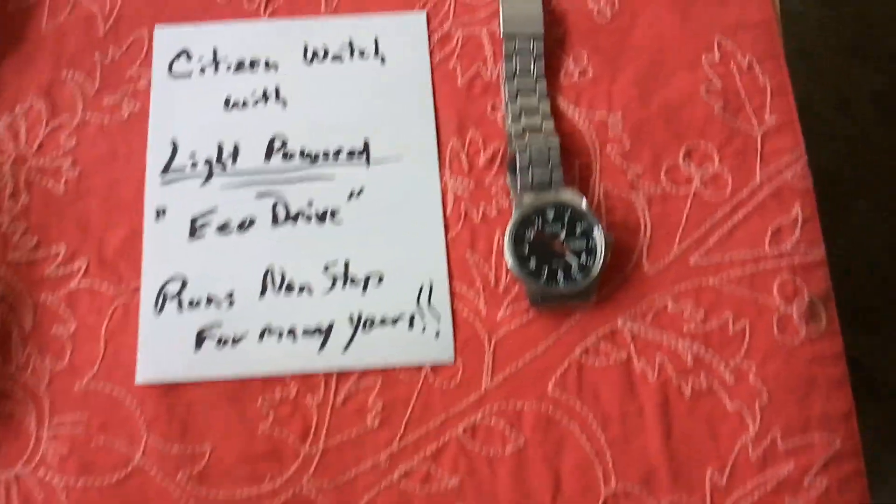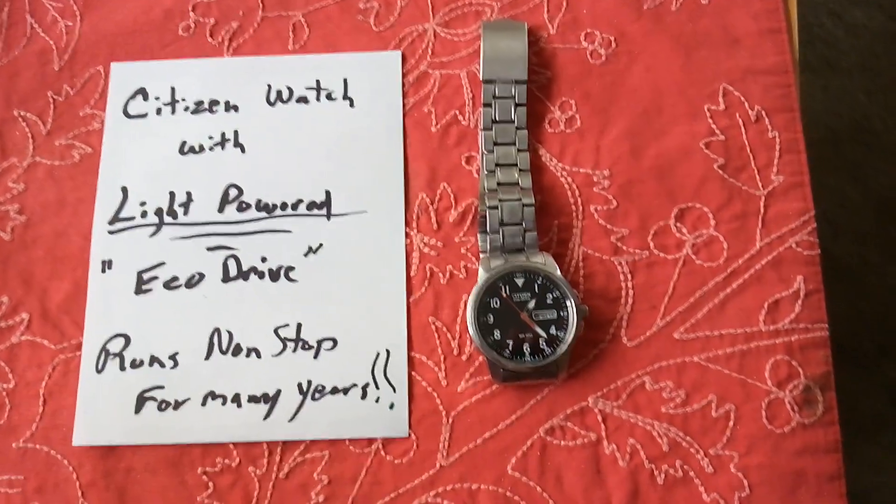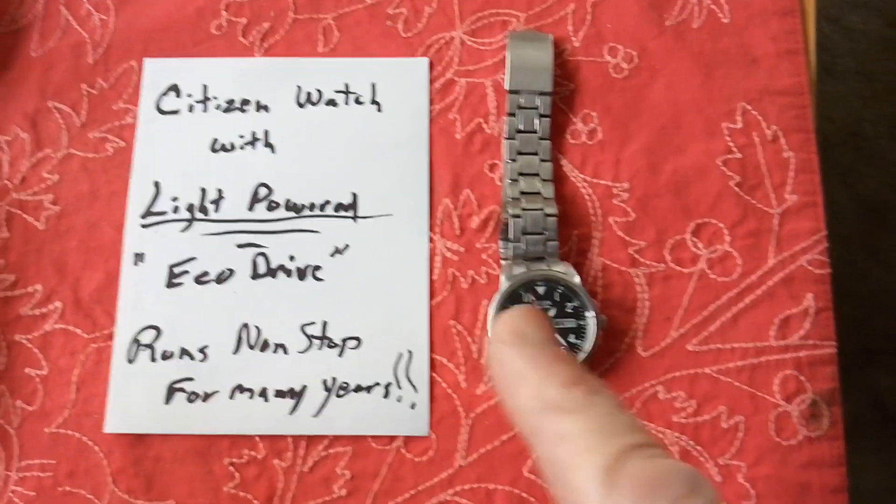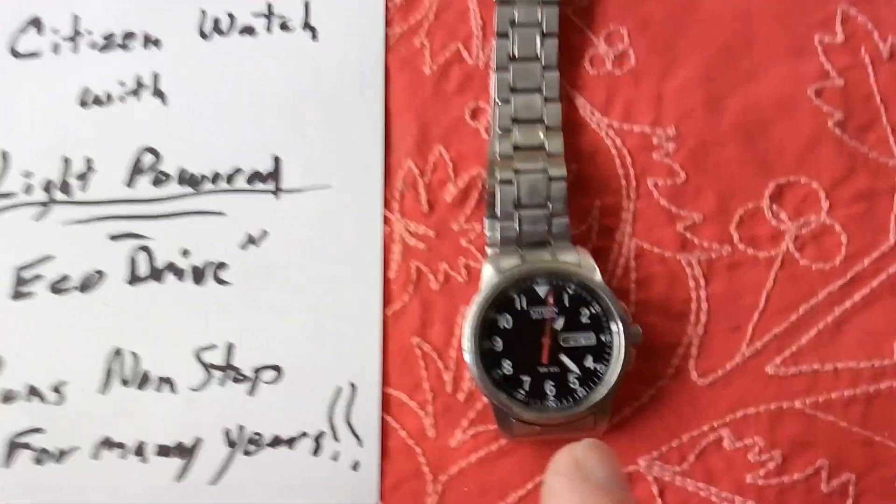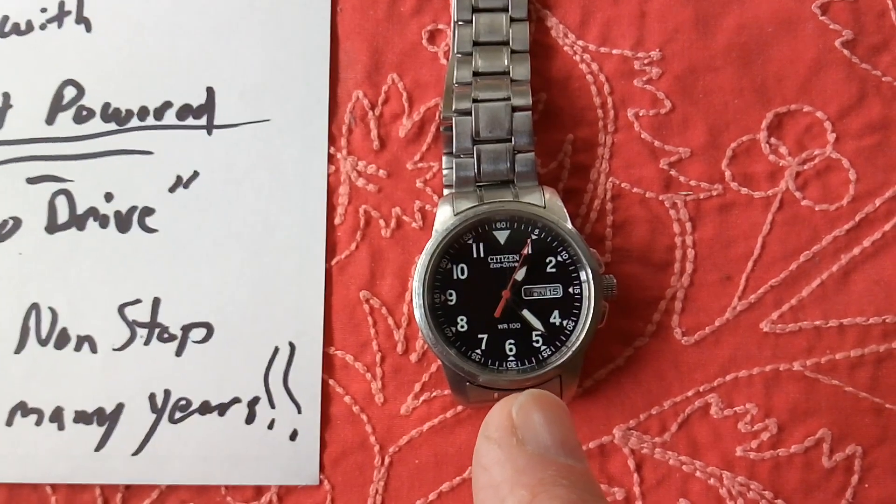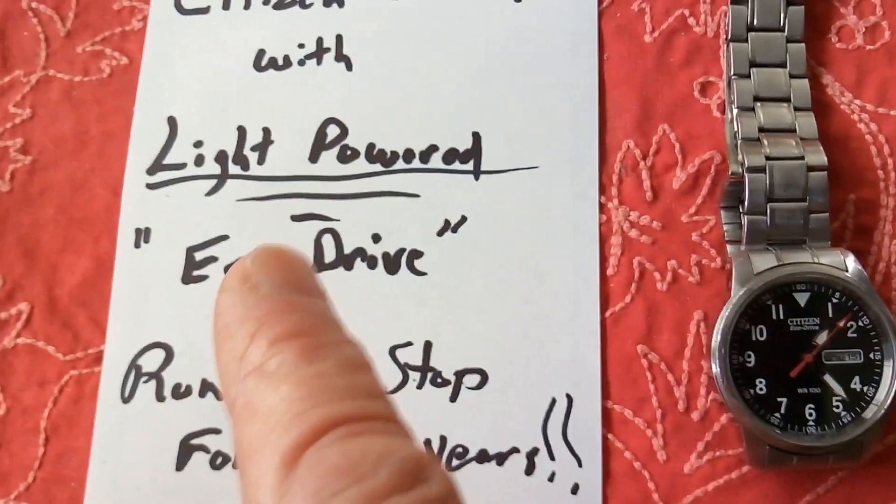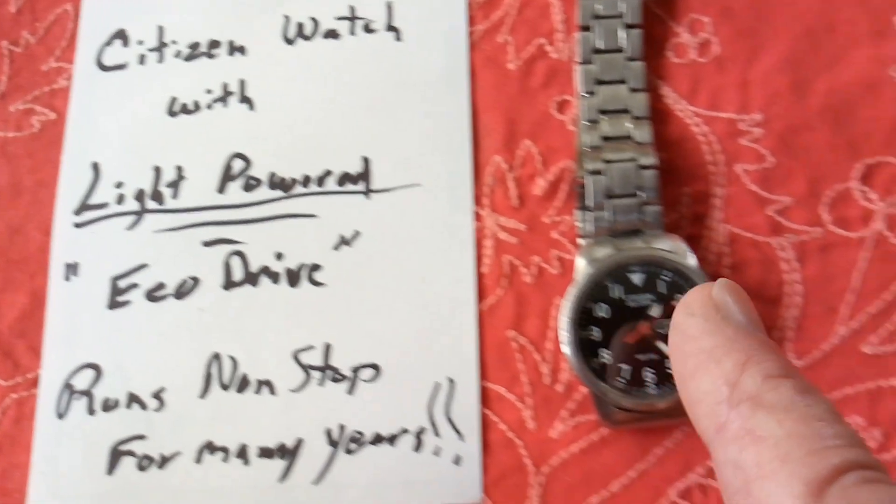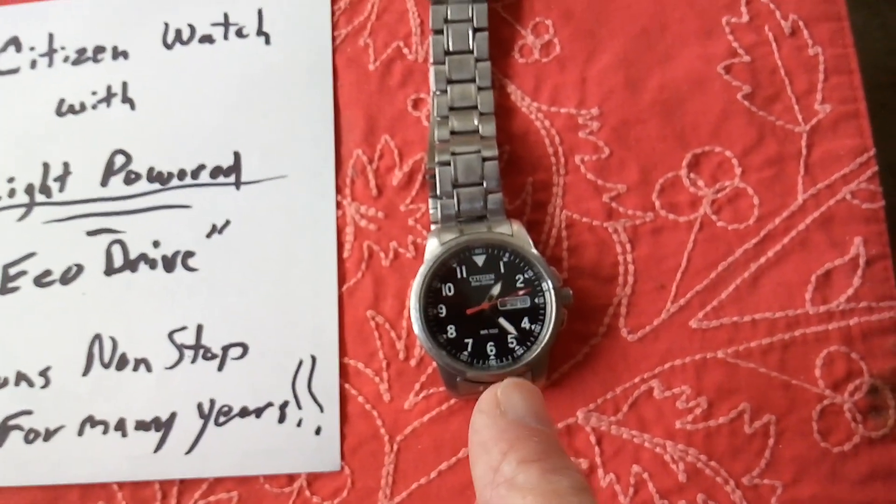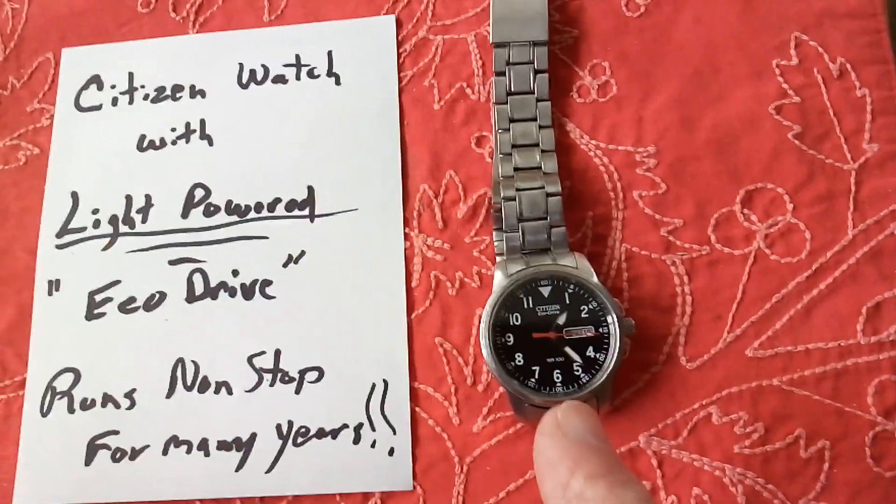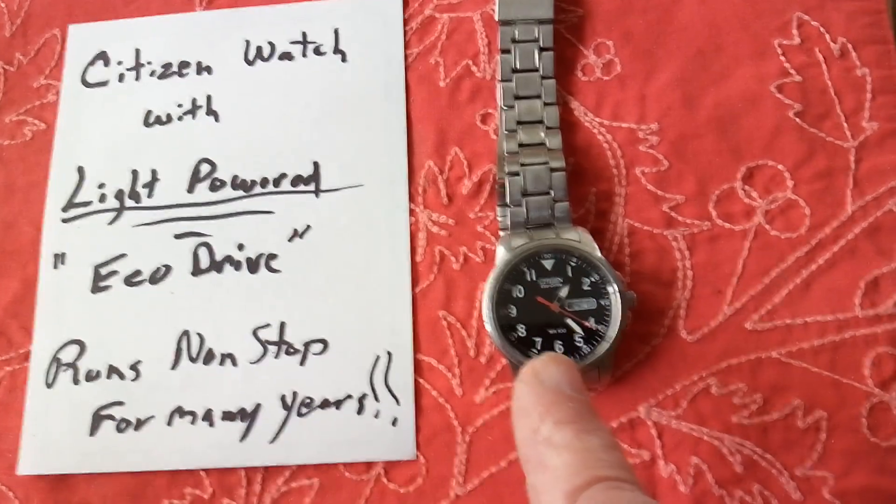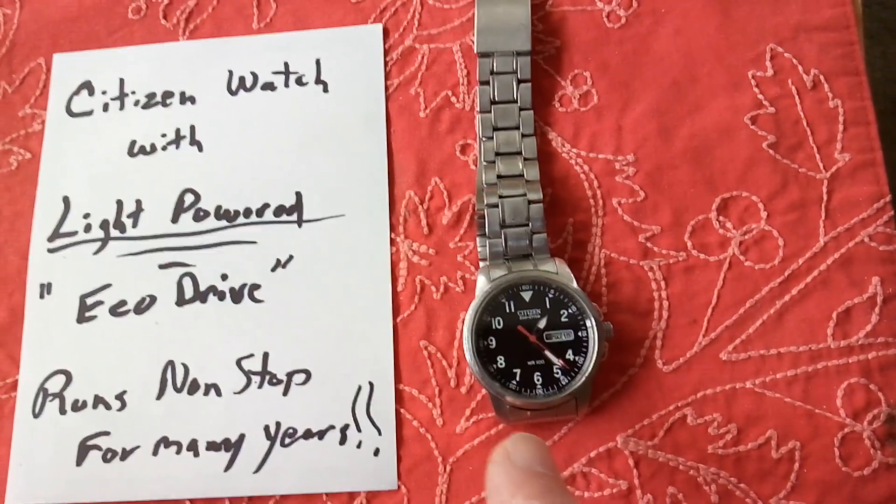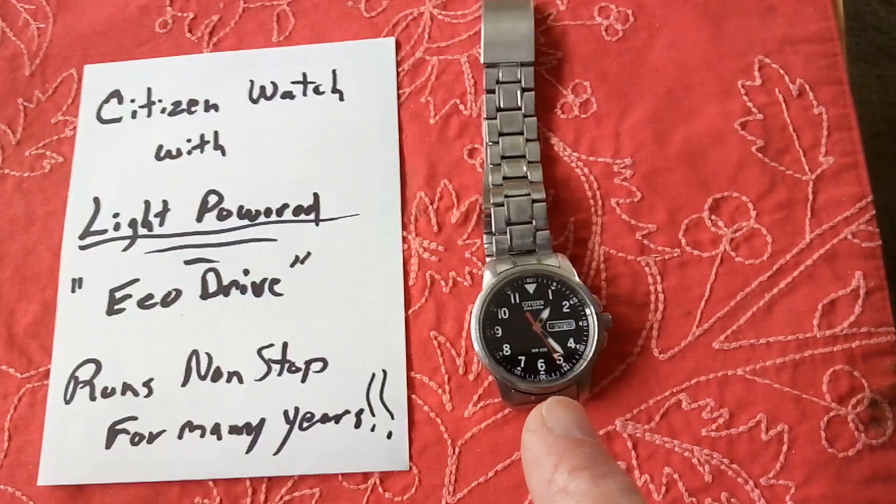Real quick, what I wanted to show here, though, was this is really a commercial device that does what I wanted it to do, run nonstop for years. This is a Citizen watch that is light powered that runs off this Eco Drive. And I believe they refer to this as a capacitor rather than a battery in that watch. They're rather expensive, but you can buy them on eBay.